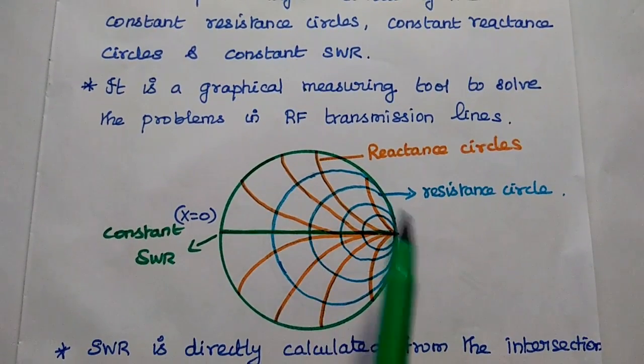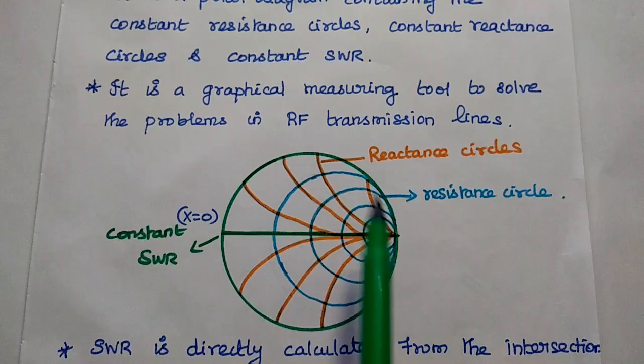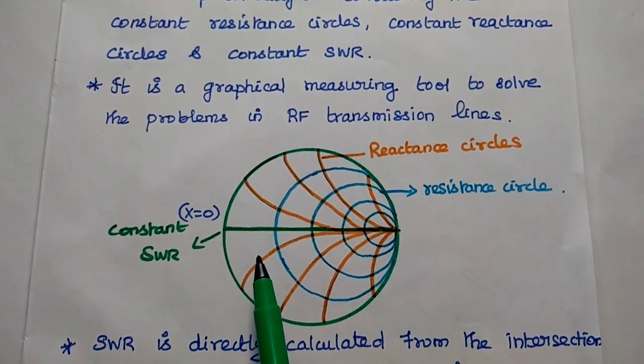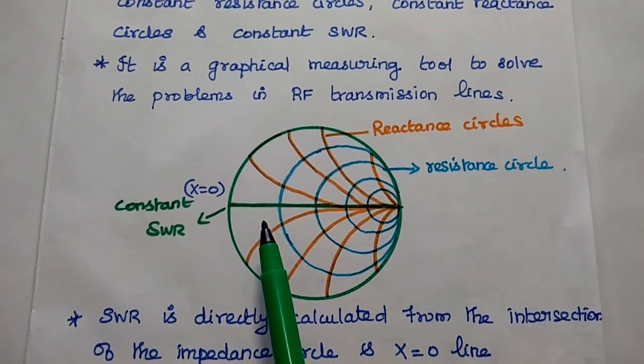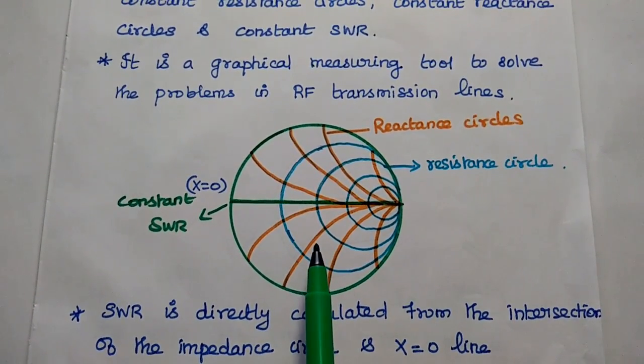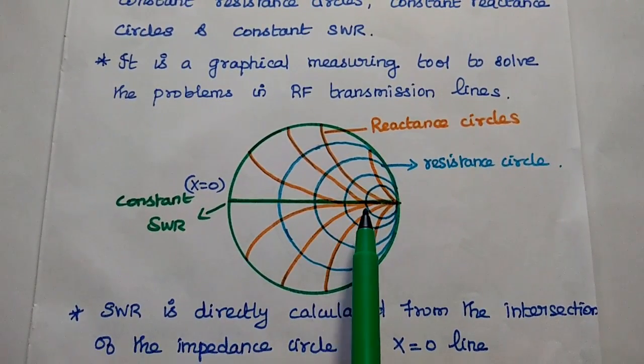Here we can see this diagram. This one is the resistance circle. This radial circle is a reactance circle. We can find out the SWR from the intersection point of the impedance circle and the X equals 0 line.